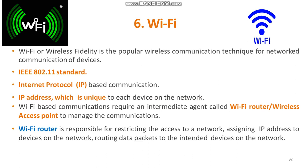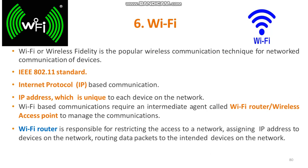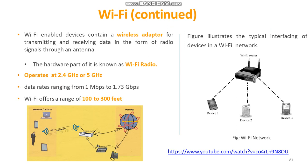The next example is Wi-Fi. Wi-Fi is a technology that uses the standard IEEE 802.11. It is based on internet protocol communication using IP addresses, which are unique to each device on the network. Wi-Fi based communications require an intermediate agent called a router or access point. The router is responsible for restricting network access, assigning IP addresses, and routing data packets to the intended devices.